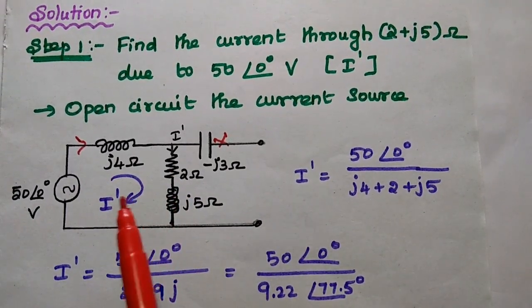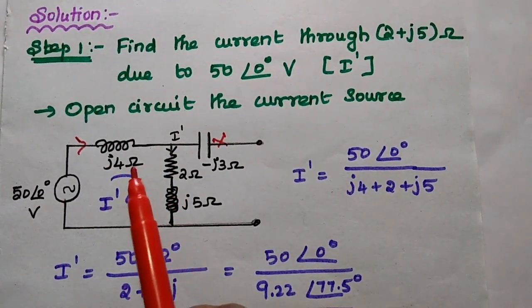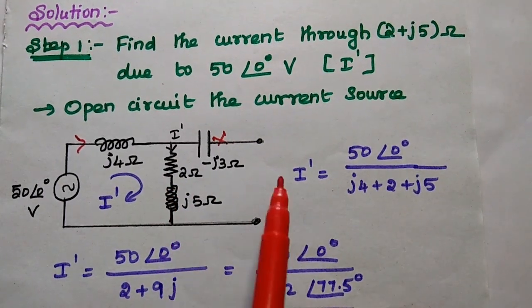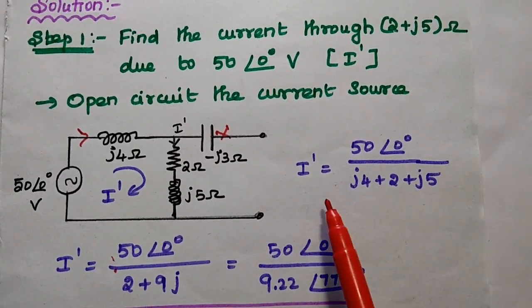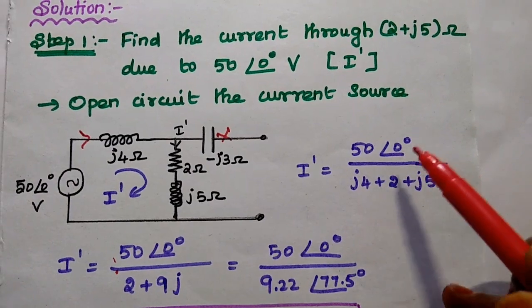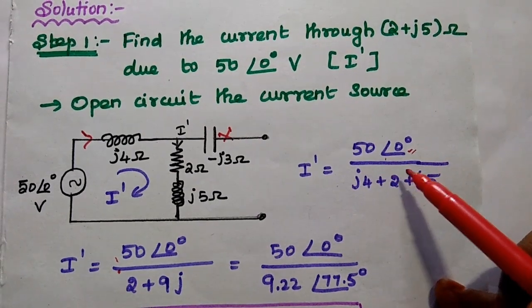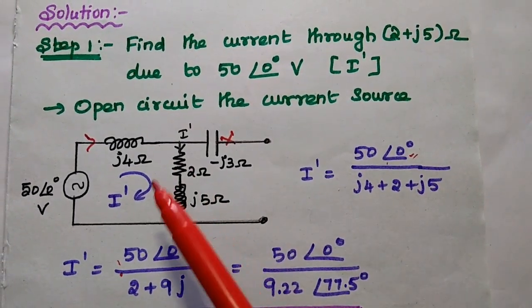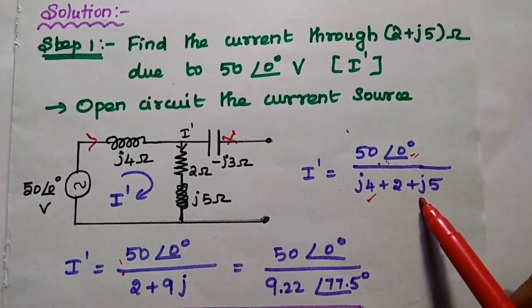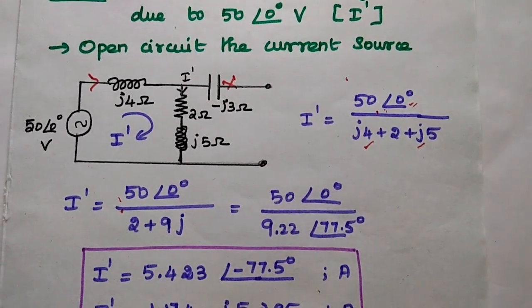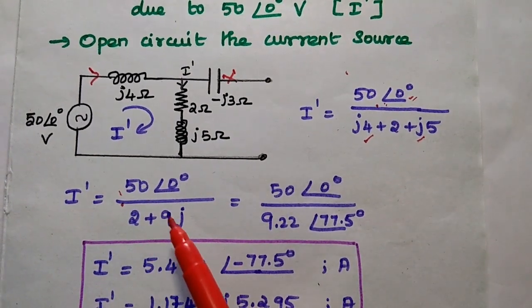According to Ohm's law, I = V/R. Since all the resistance values are connected in series, we take the equivalent resistance as the sum of all resistance values. So I' equals 50∠0° divided by the sum of all resistance values: J4 plus 2 plus J5. Adding the imaginary values, we get I' = 50∠0° divided by (2+J9).